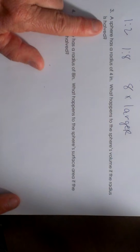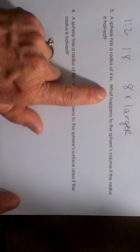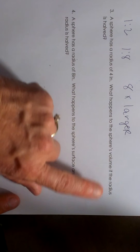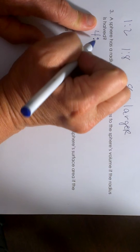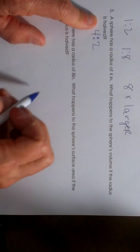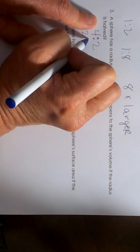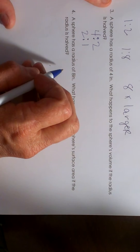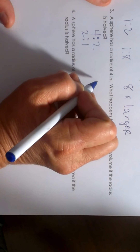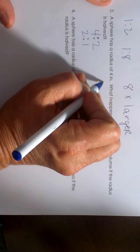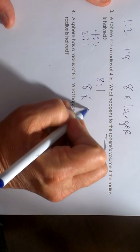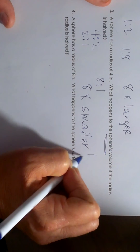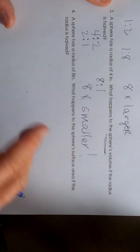Number three: a sphere has a radius of four. What happens to the volume if the radius is halved? If the radius is four for the big one and then halved down to two, the ratio is two to one — it's getting smaller. Let's cube them: the large one would be eight, the small one would be one. So the volume is going to be eight times smaller, because it's getting smaller rather than larger.